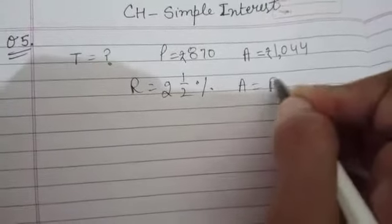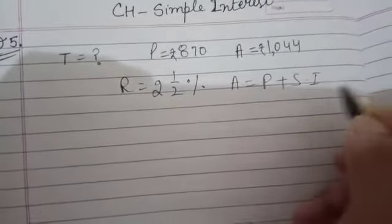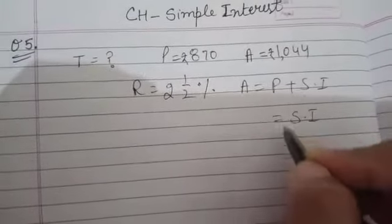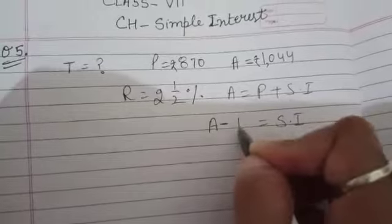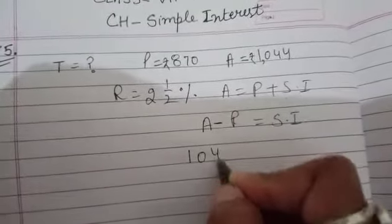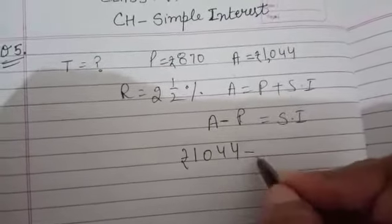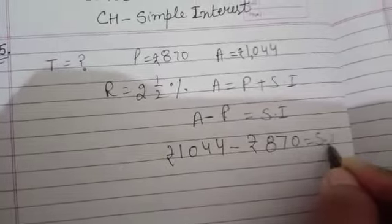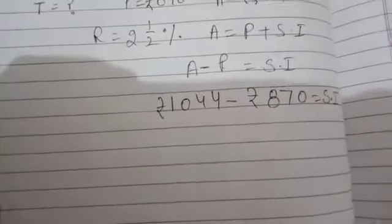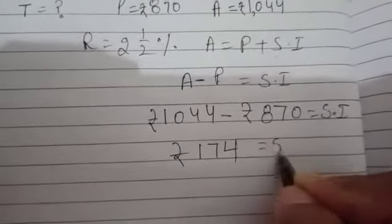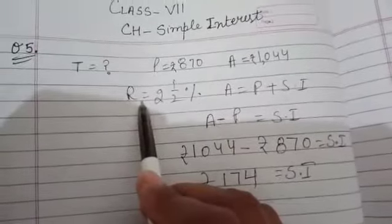So let's start. We know amount is equal to principal plus simple interest. So if we want to find the value of simple interest from here, we can keep it aside and take principal to another side. So now put the values. 1044 minus rupees 870. Simple interest, after subtracting, you will get 174 rupees.